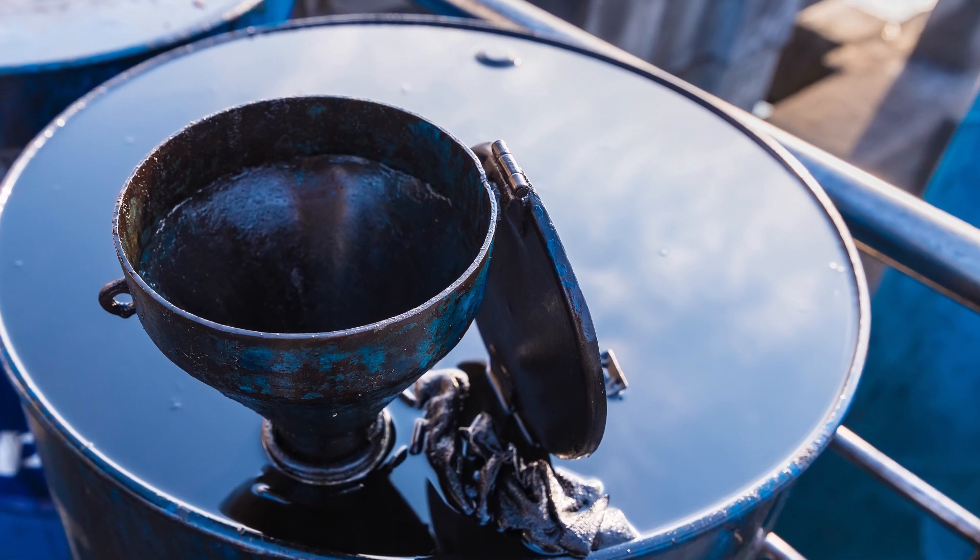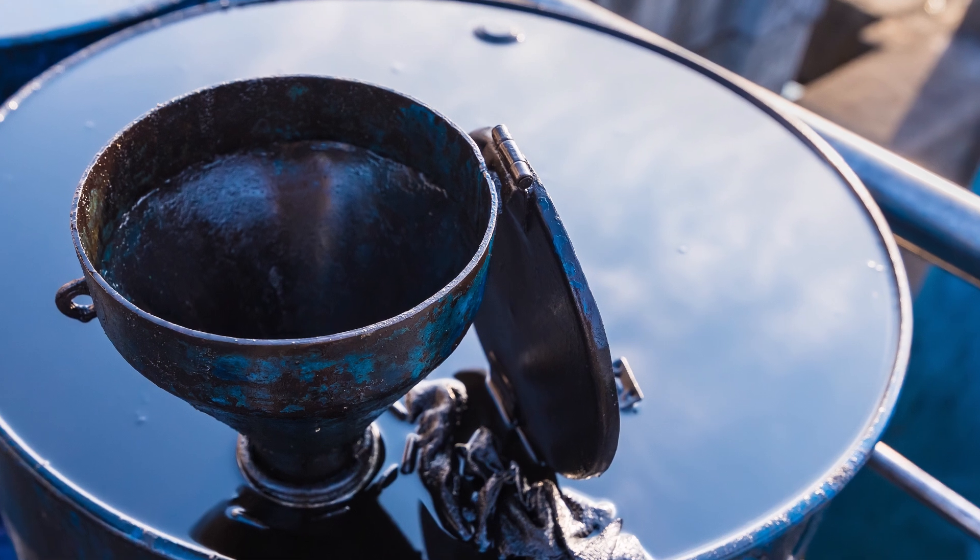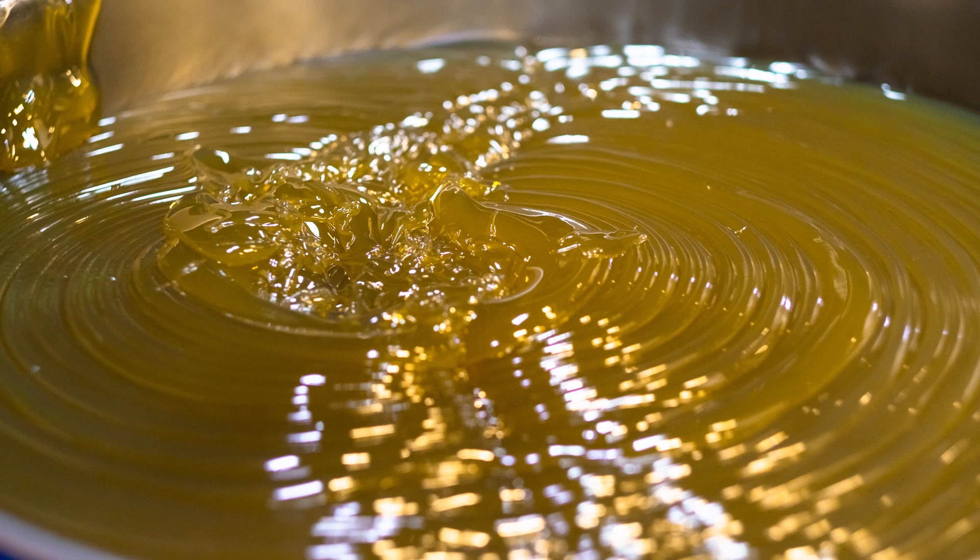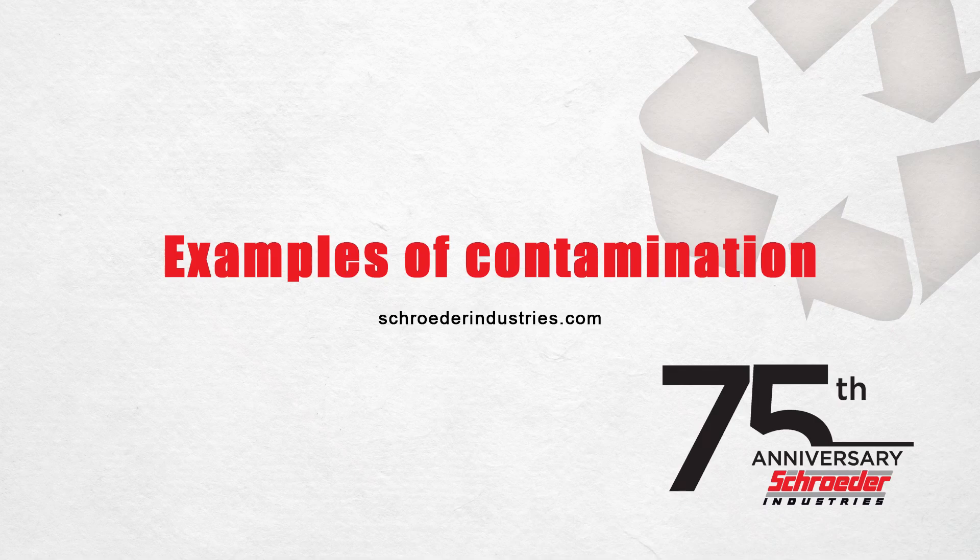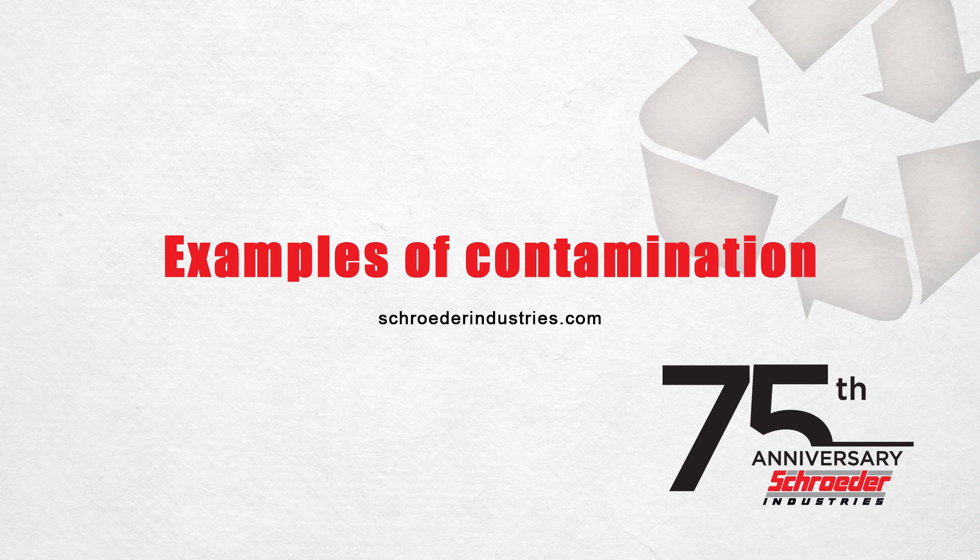Additionally, normal and abnormal wear of components are vehicles for internal generation of contamination. Consider so-called new fluid—in many cases, new fluid, especially from metallic drums, can be contaminated right from the get-go unless it has been certified clean from an oil supplier. Last but not least, contamination can occur as a byproduct of other contaminants, as I previously mentioned. Let's talk about a few examples.